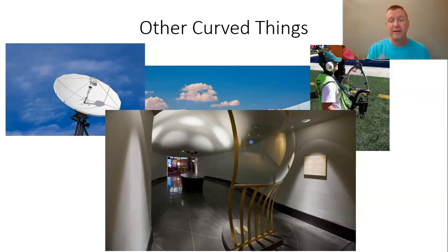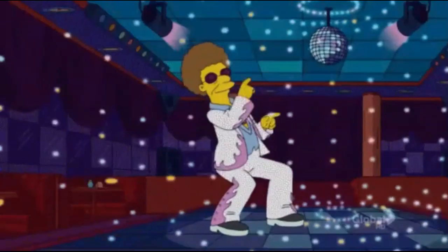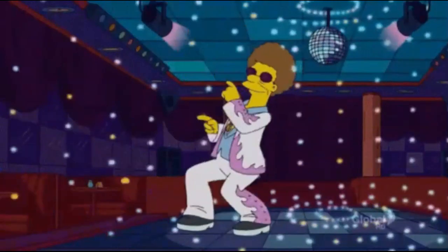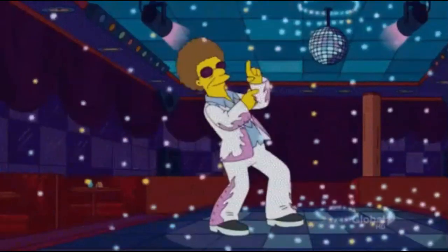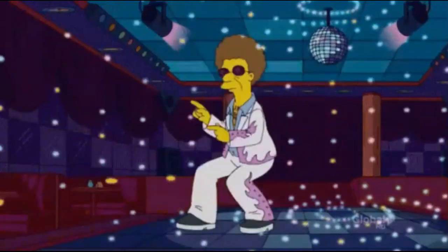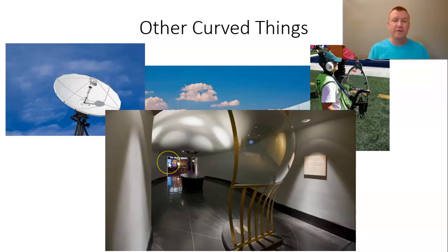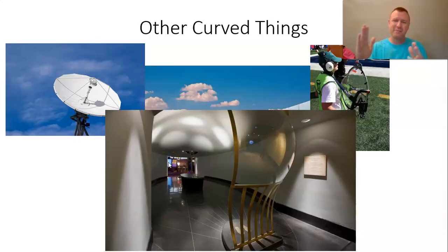One more example of a convex mirror: a disco ball. It's just a bunch of tiny flat mirrors glued on a sphere — so it's essentially a convex mirror.